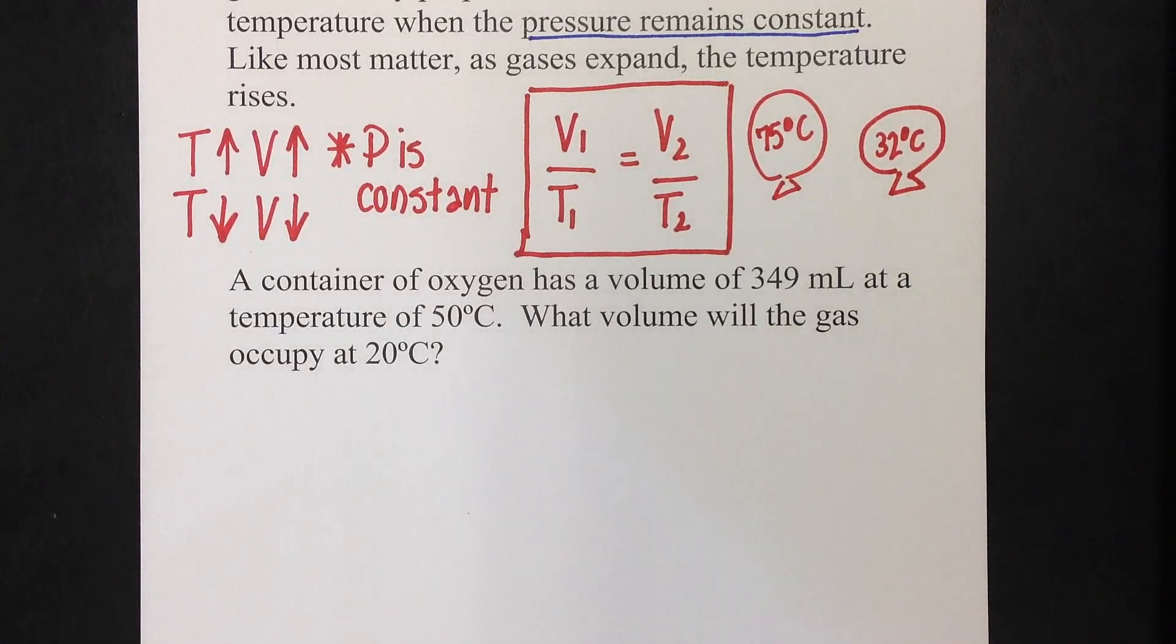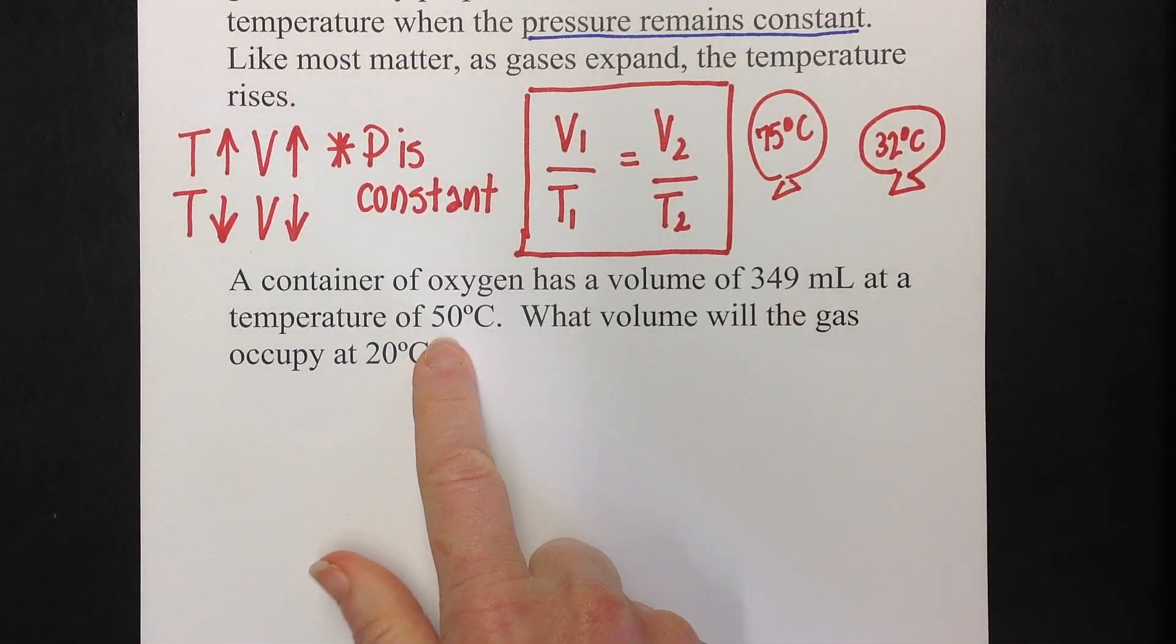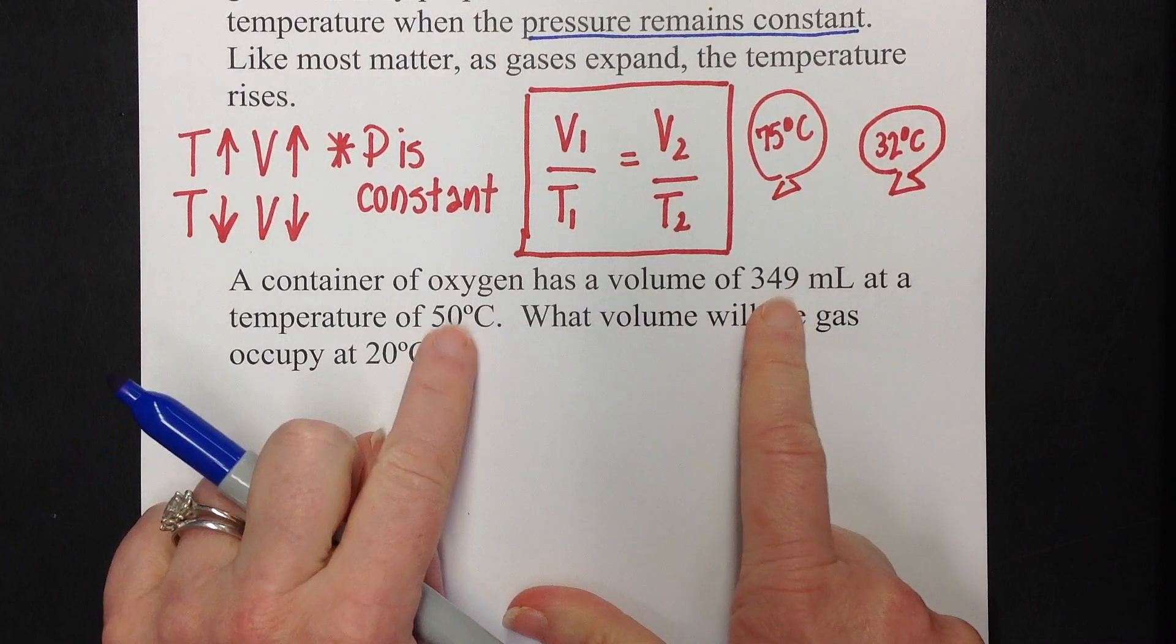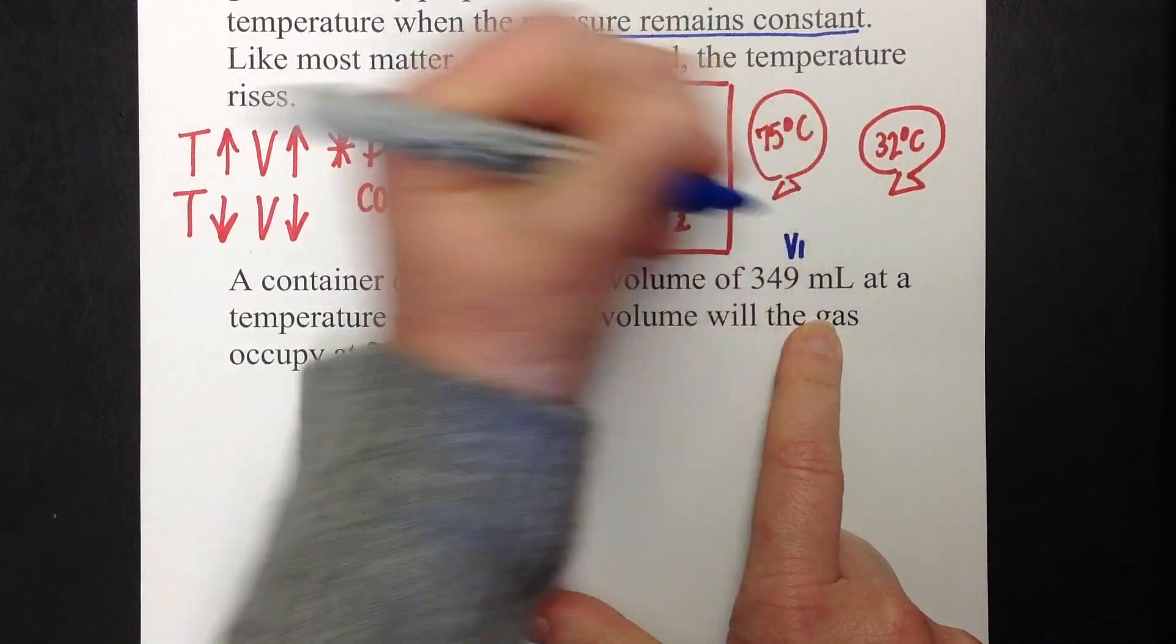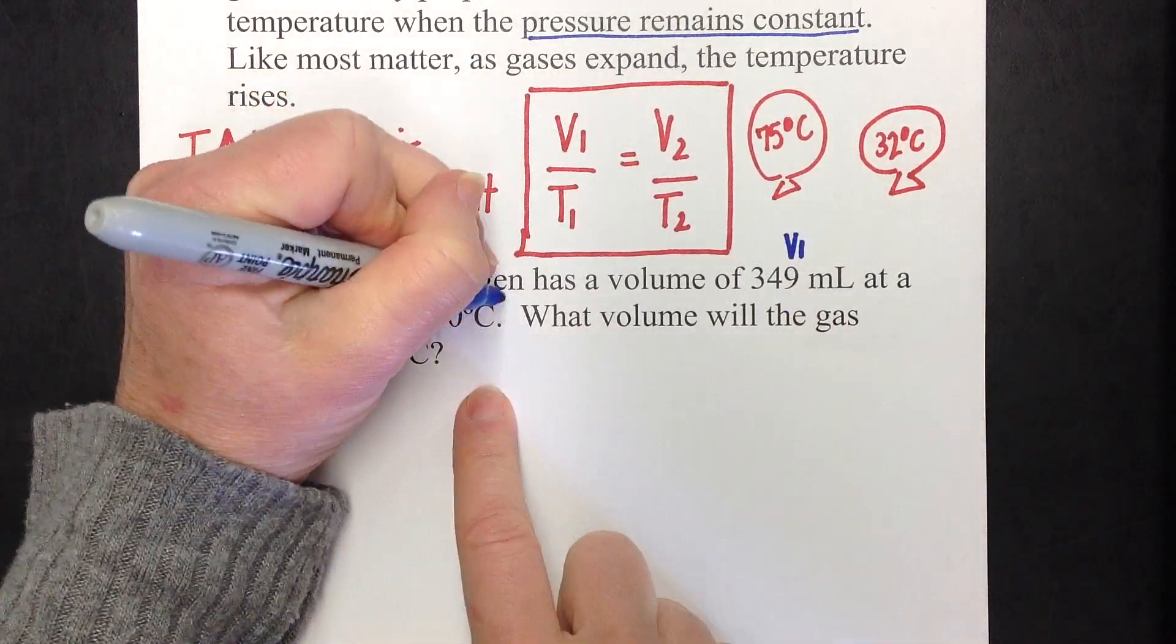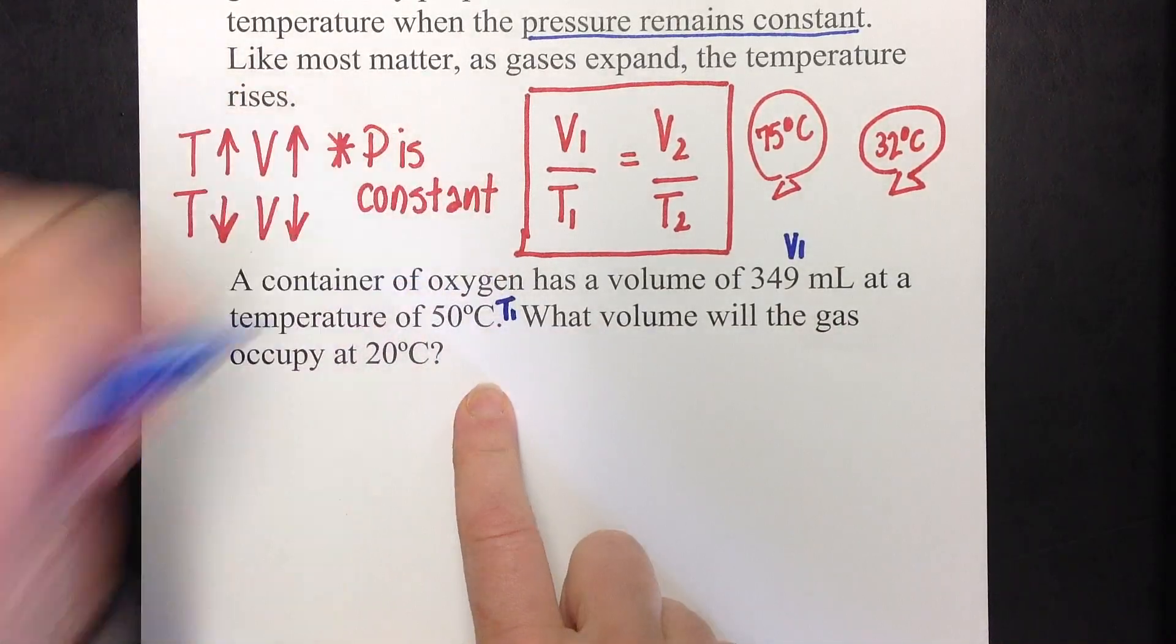A container of oxygen has a volume of 349 milliliters at a temperature of 50 degrees Celsius. So, at this temperature, I have this volume. These go together. So, I'm going to make this my volume one, and that 50 degrees Celsius is going to be my temperature one.